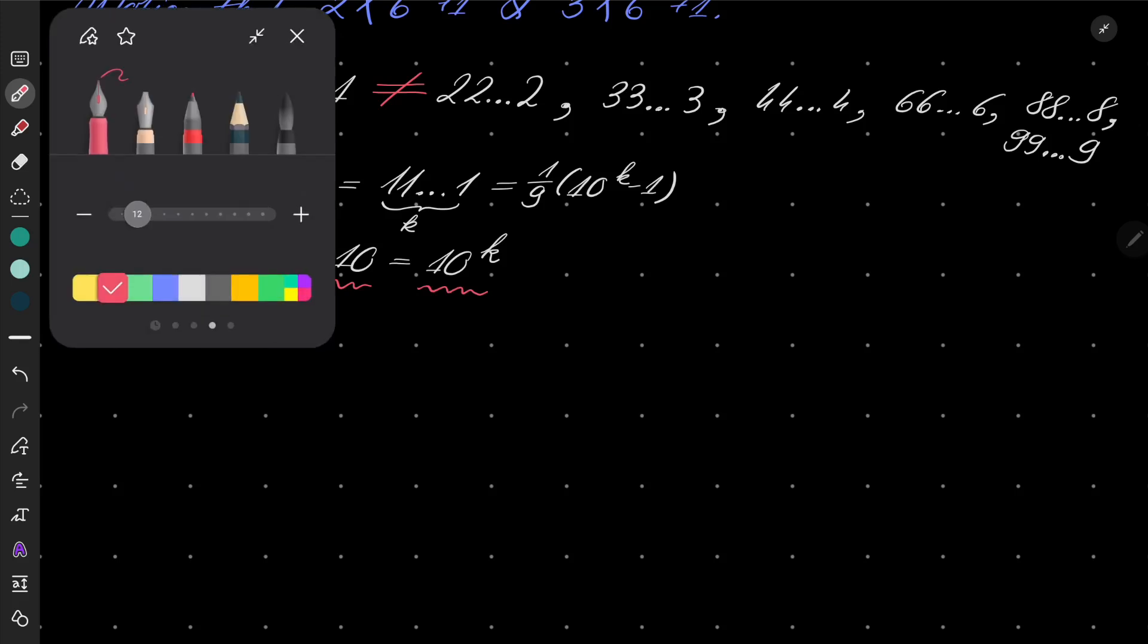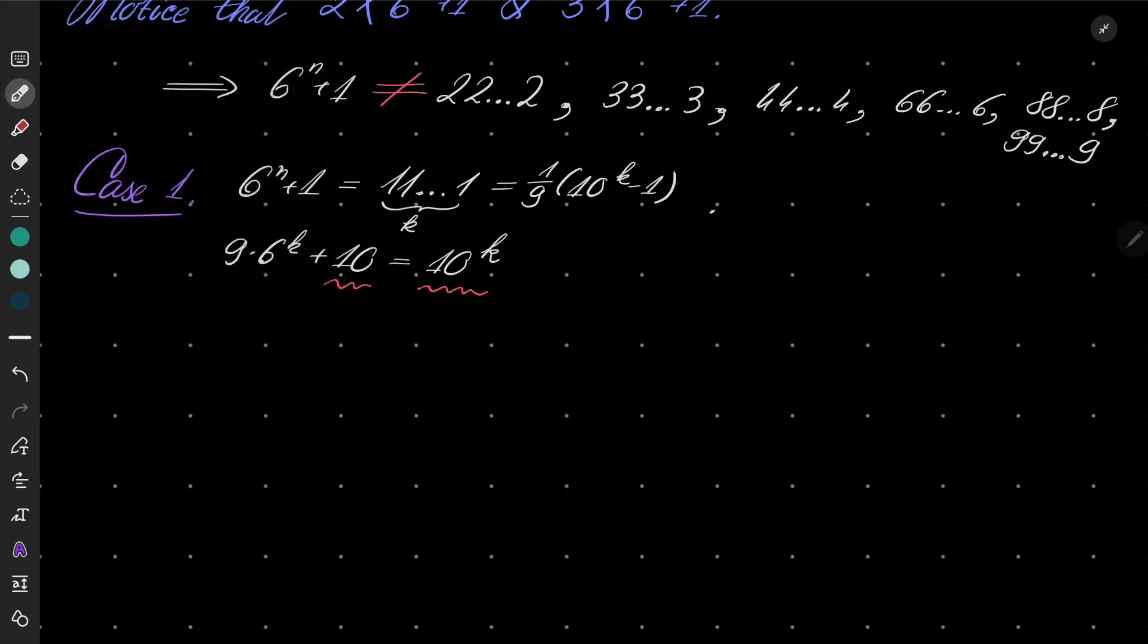And now we have a problem, namely this number is divisible by 10, this number is also divisible by 10 because k is a positive integer,